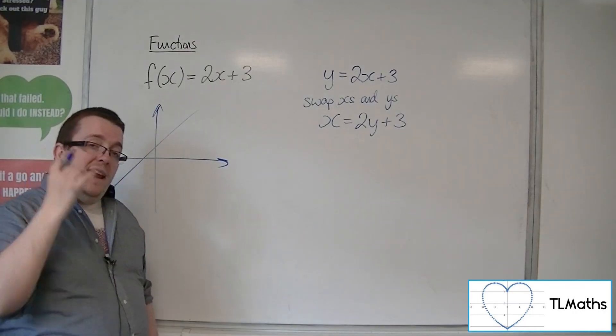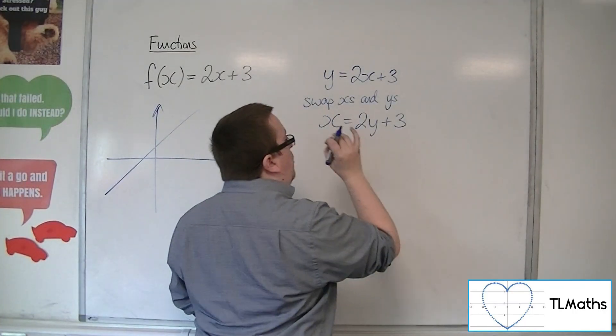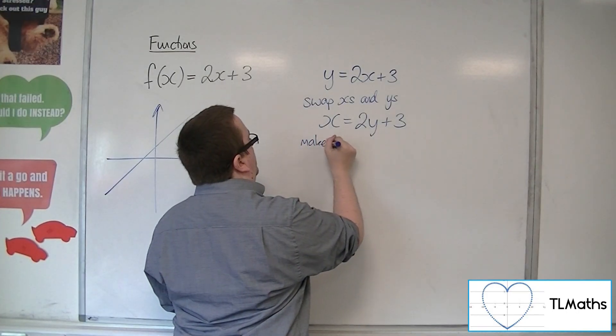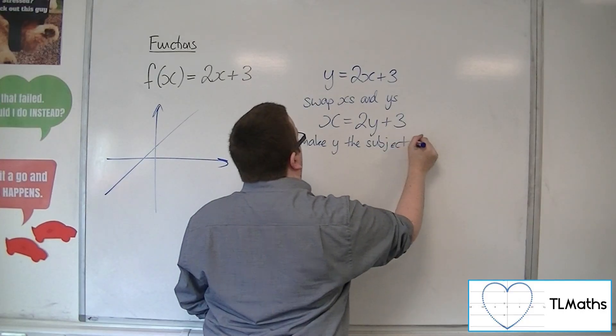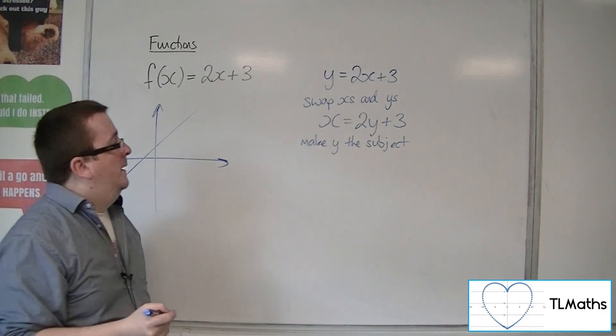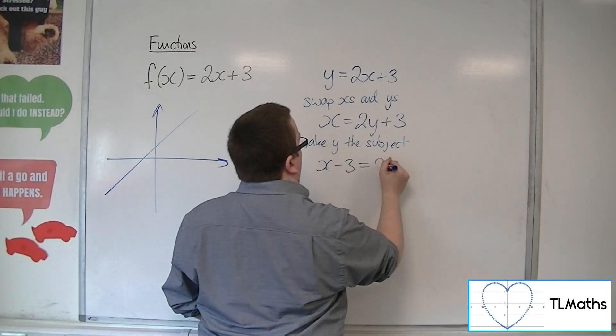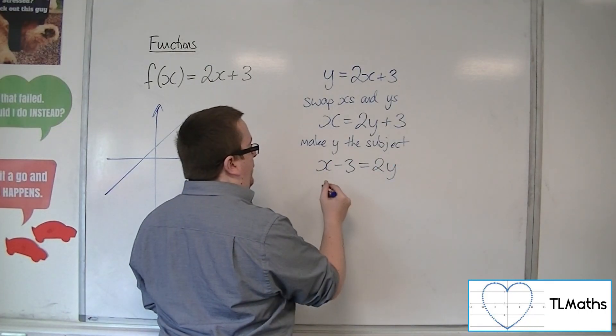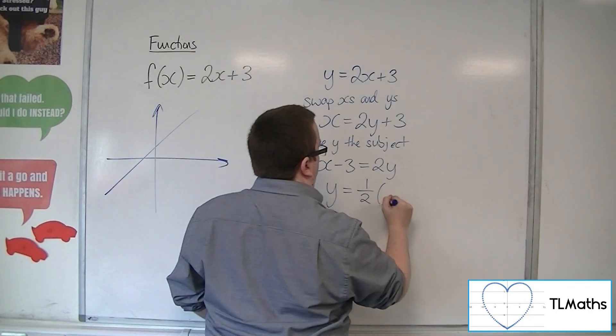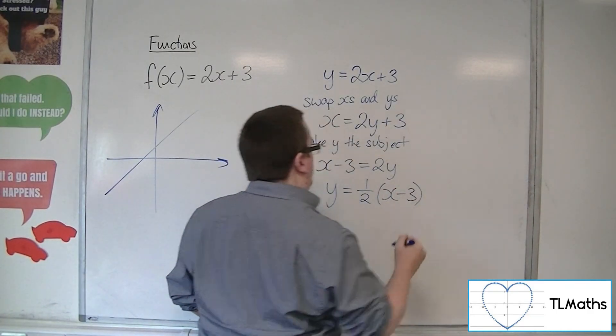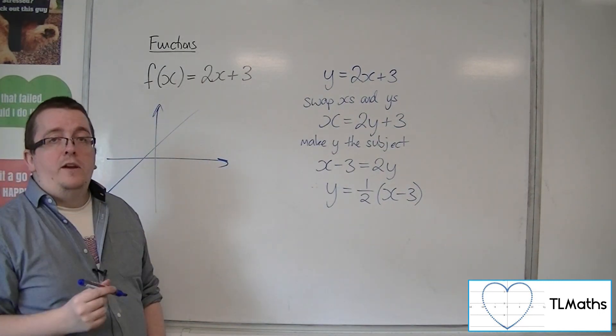Our next step is to make y the subject. So rearrange it to get y equals. So I'm going to subtract 3 and then divide both sides by 2. And I would get y equals half x minus 3 halves.